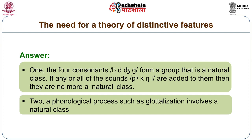It is one thing to state that ba, da, ja, ga form a natural class, but it is another thing to try to present it, to write it in the form of an explicit rule to show that this is a natural class. So we want to make a distinction between a statement and a description. A description should be in scientific terms. When we want to take our discipline to a scientific level, it becomes necessary for us to make predictions about what a natural class is. When we want to characterize a natural class, then we find that the notion of distinctive features comes of critical help.